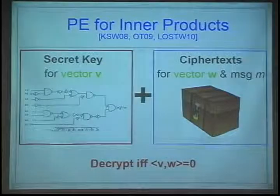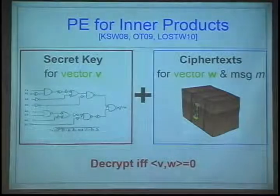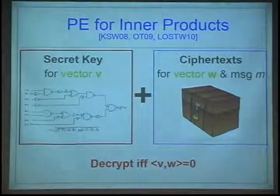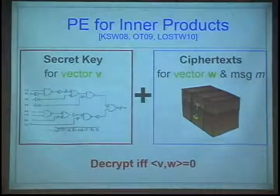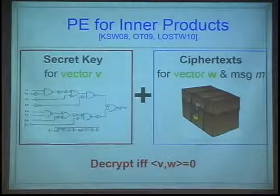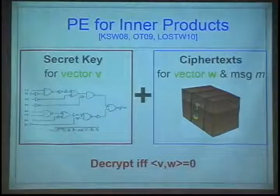The security property that we want in this setting is that the ciphertext should hide not just the message, but also the vector w. This vector is referred to as the vector of attributes in this setting.